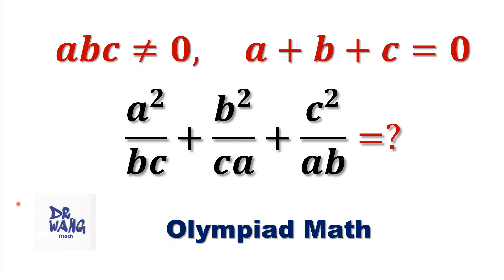Here is the question. If A times B times C does not equal zero, that means each of A, B, C cannot be zero.